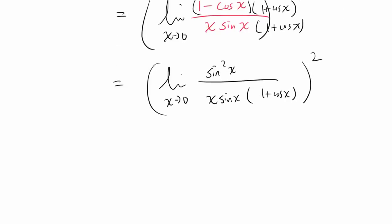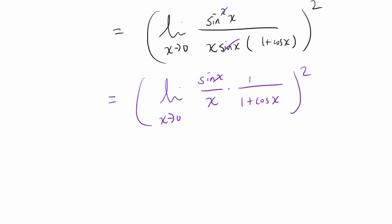And we immediately see that one sine of x is canceling out. So that's going to cancel out with one of the sin² x. And we have limit as x approaches 0 of sin x / x, which we know how to evaluate. And we also have 1 / (1 + cos x). And we are squaring the entire thing.